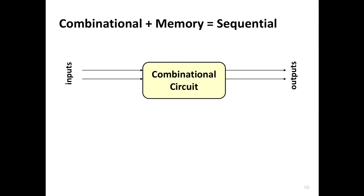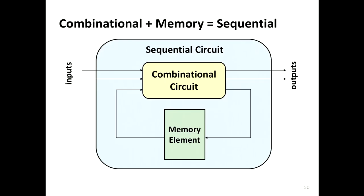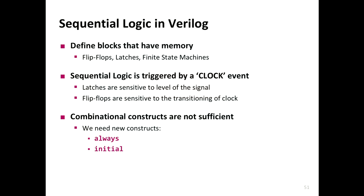A quick recap: combinational circuits take a bunch of inputs, produce outputs based on some logic design, and have no memory. When you want to introduce sequential logic, you introduce a memory element — you have to remember a certain state. A sequential circuit is a combination of the combinational circuit plus the memory element. Today we will design various sequential circuits in Verilog, starting with how to define blocks that have memories — flip-flops, latches, and finite state machines.